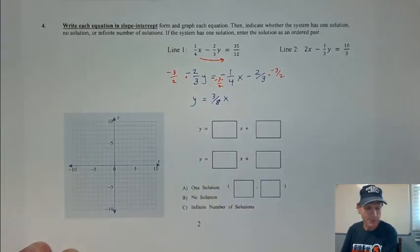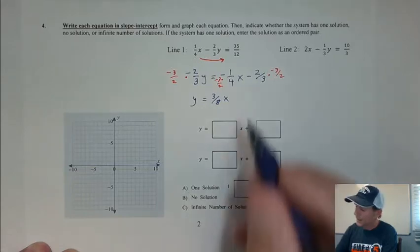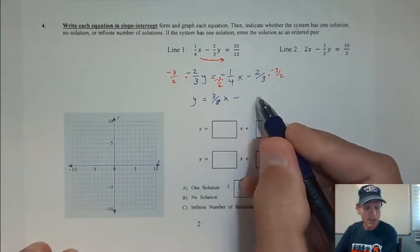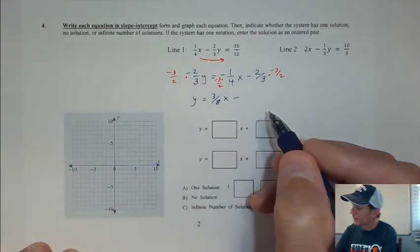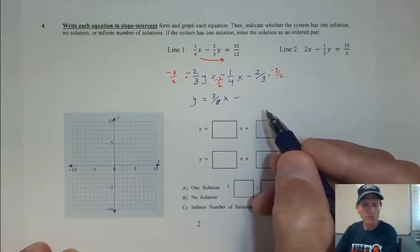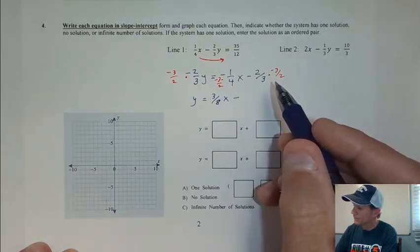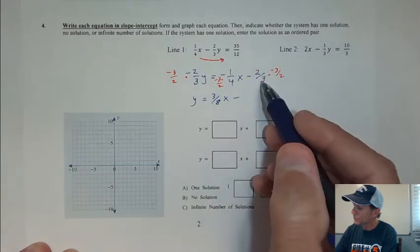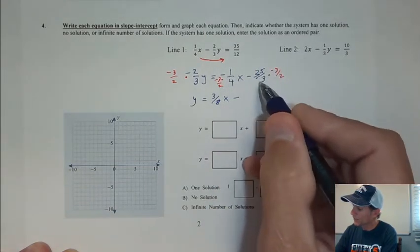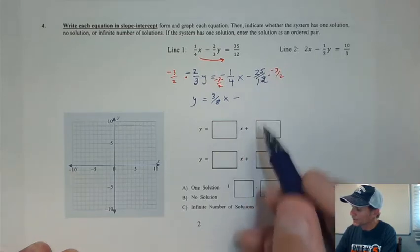And you can do that multiplication on your calculator, and then minus 35 eighths. I'm not sure what happened here. Oh, I copied down my minus 2 thirds here, so I'm going to make that. That was 35 over 12, a little mistake there. Be careful.